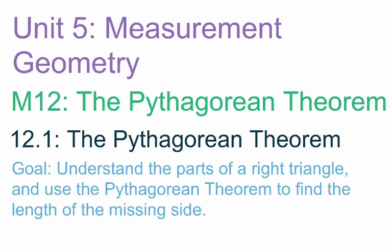One thing you have to understand about the Pythagorean Theorem is that we can only use it with a right triangle. So we're going to talk about right triangles, label the parts, and what they indicate. I have a picture of a triangle here. Now, this is not a right triangle just yet. In order for it to be a right triangle, we need to have this little square in the corner here. It's this square in the corner that tells us we have a right angle, and if we have a right angle, then we know we have a right triangle.